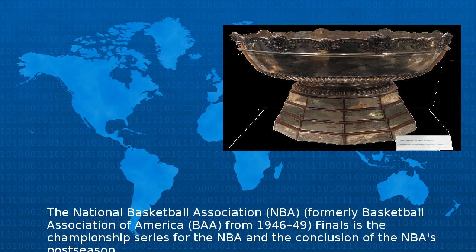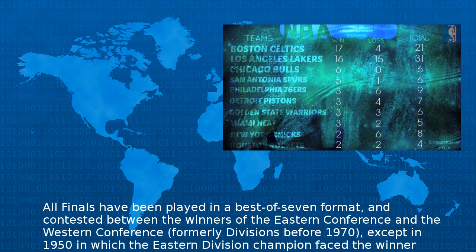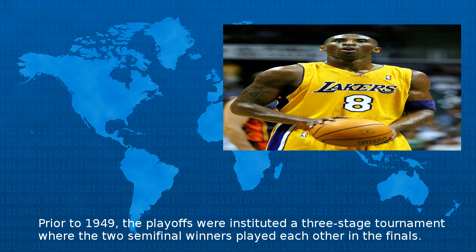The National Basketball Association, formerly the Basketball Association of America from 1946–49, Finals is the championship series for the NBA and the conclusion of the NBA's postseason. All finals have been played in a best-of-seven format, and contested between the winners of the Eastern Conference and the Western Conference, except in 1950. Prior to 1949, the playoffs instituted a three-stage tournament where the two semifinal winners played each other in the finals.